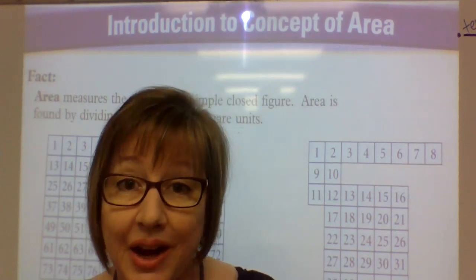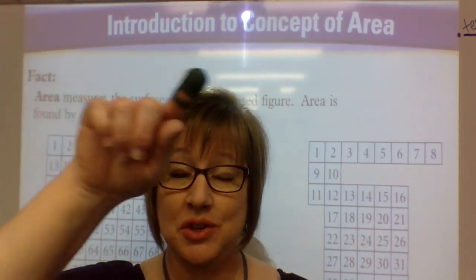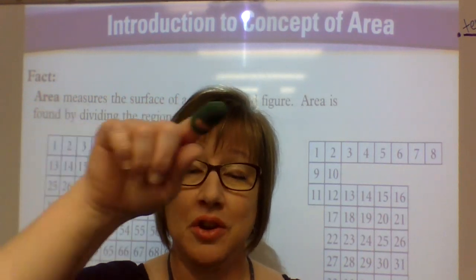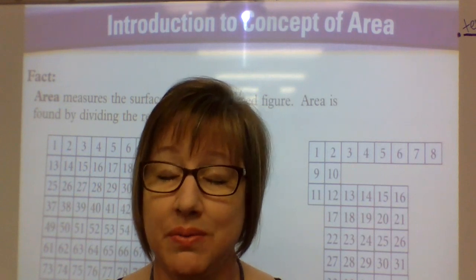Now, it's a little different when you get to area. Perimeter is the measurement around something, like if you're measuring around your yard, so you'll know how much wood to make to get your fence, to put around your fence.